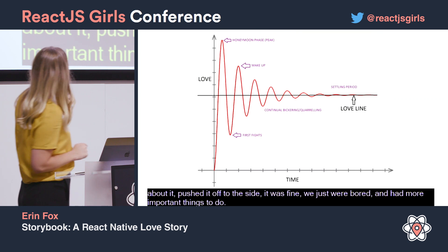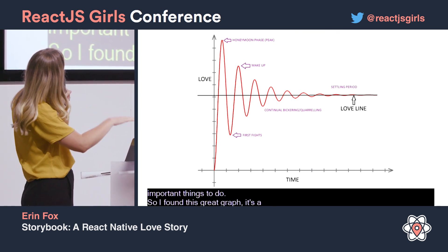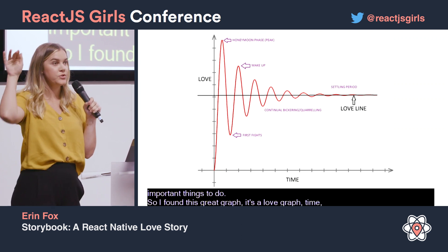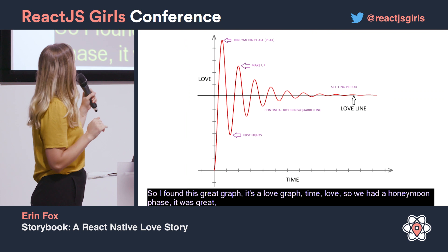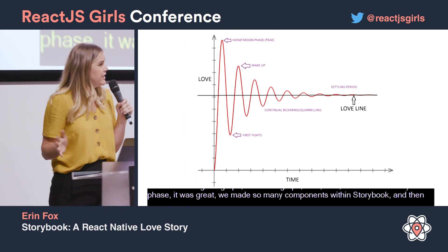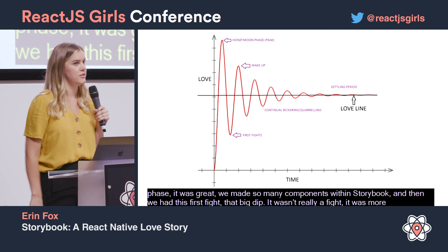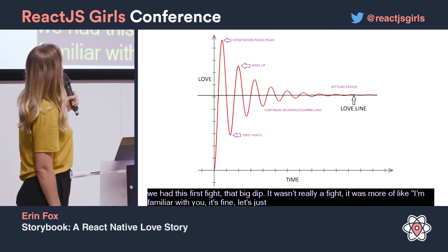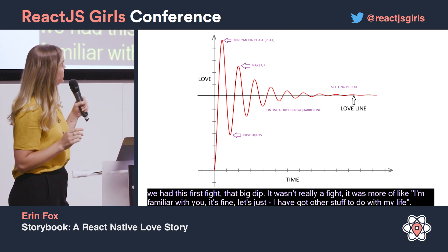I found this great love graph — time on one axis, love on the other. So we had a honeymoon phase; it was great, we made so many components within Storybook. And then we had this little first fight, that big dip. It wasn't really a fight — it was more like, I'm familiar with you, it's fine, I've just got other stuff to do with my life. And then we eventually find the love line again, but I'll get to that in a moment.